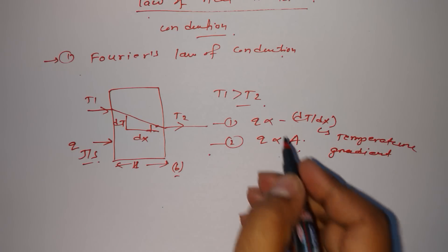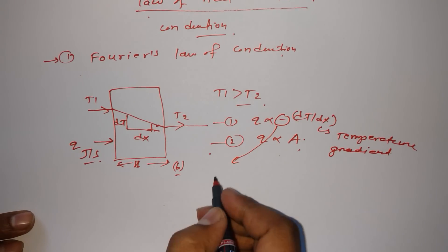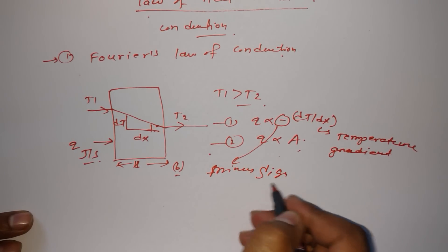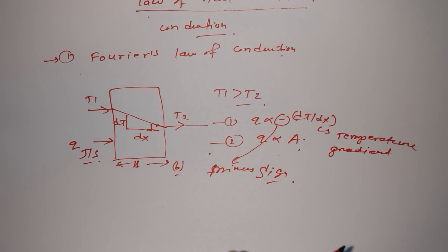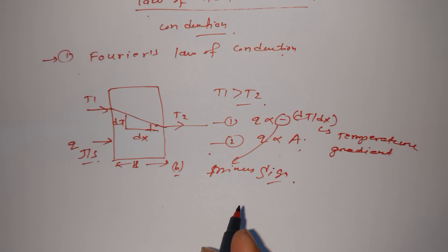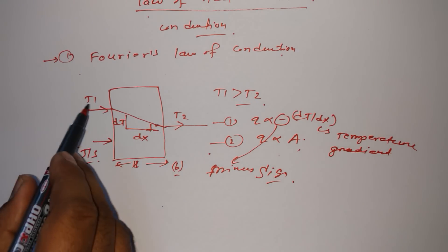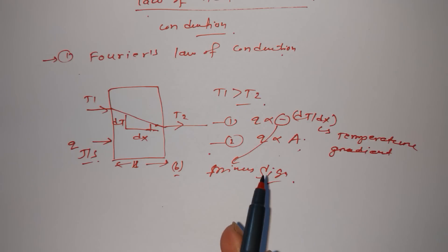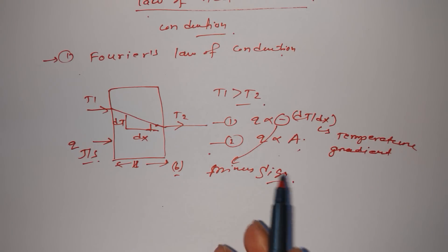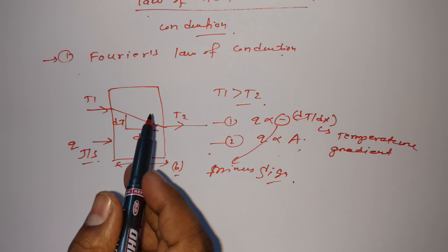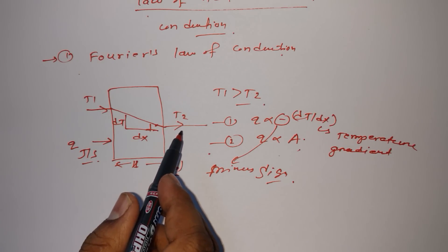Another important thing I need to discuss is the minus sign. Why this minus sign? This is important, so listen carefully. It's because of equilibrium. Think about it - there is a difference between T1 and T2. If T2 minus T1, it would be negative because it's flowing from higher temperature to lower temperature.